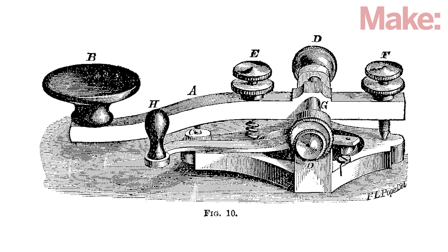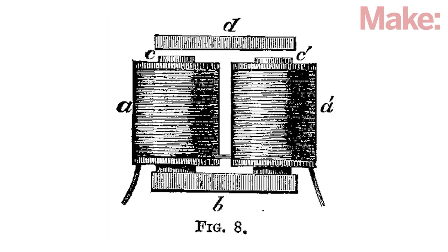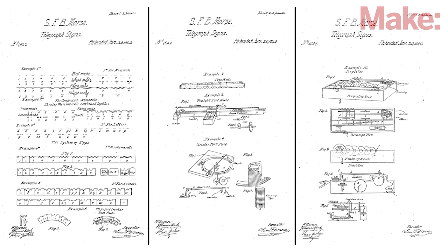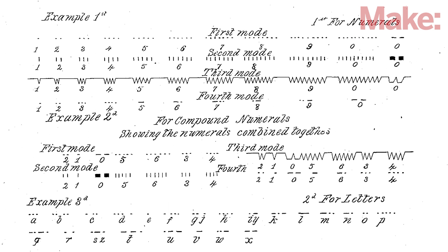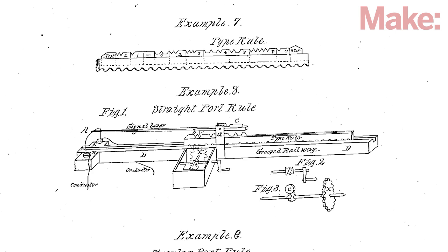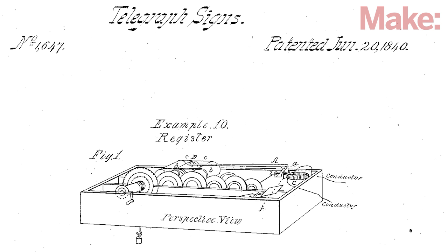The telegraph that we're familiar with is a simple device, not much more than a switch on one end and an electromagnet on the other. But compare that to Morse's original patent for the telegraph. It's complex, requires a fair bit of precision to build, and is, surprisingly, toxic.